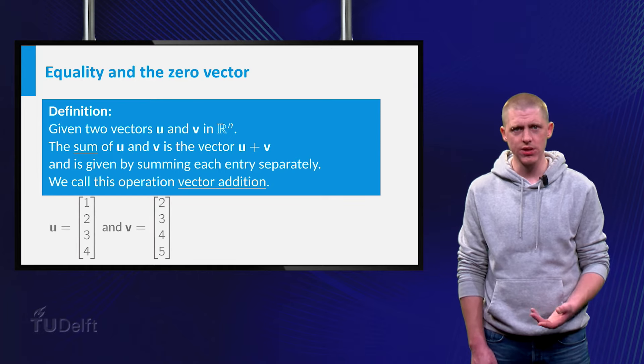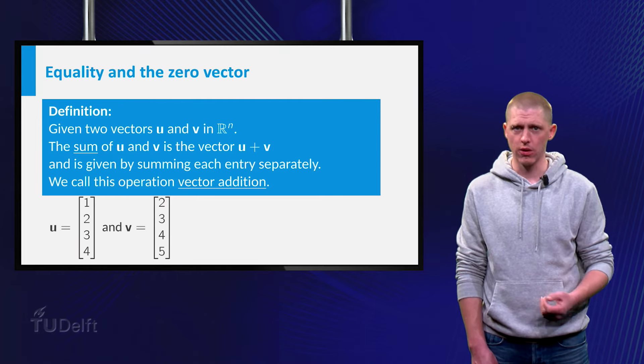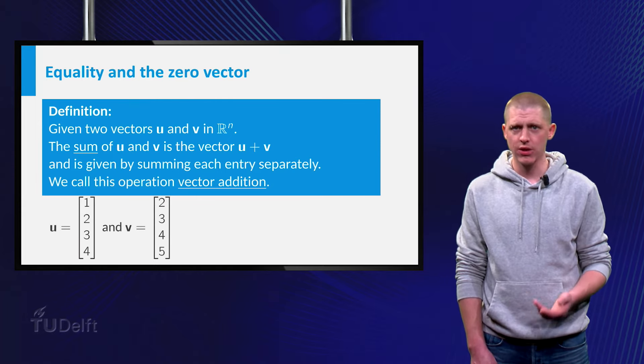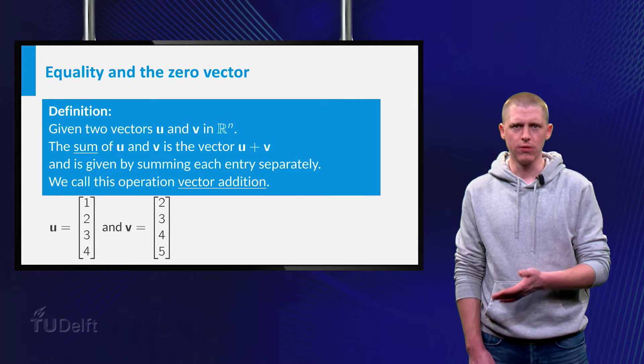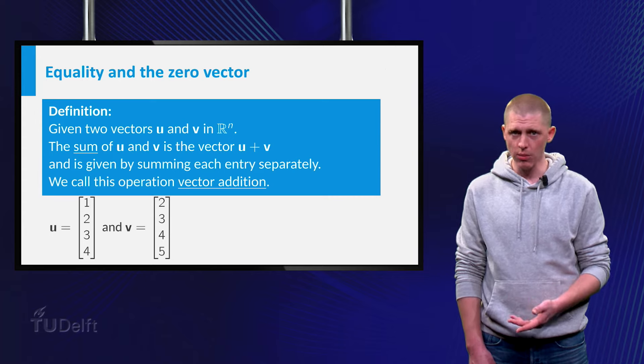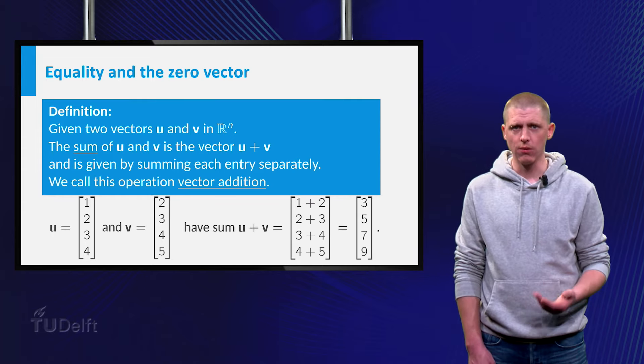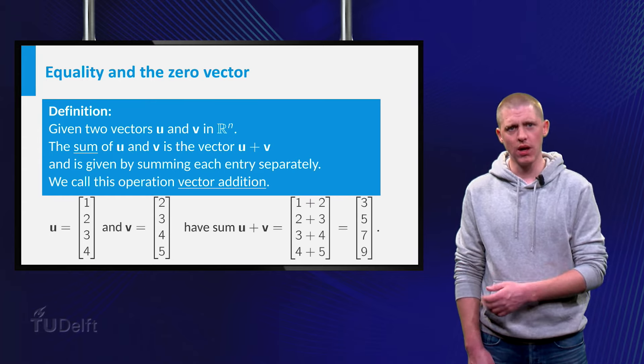As an example, let us add two vectors from R4. Take u as 1, 2, 3, 4 and v as 2, 3, 4, 5. The sum of u and v is now 3, 5, 7, 9.